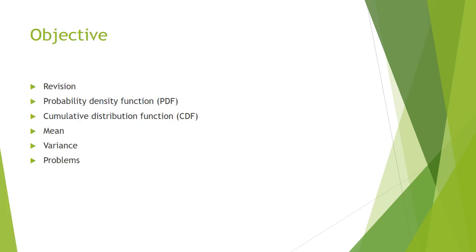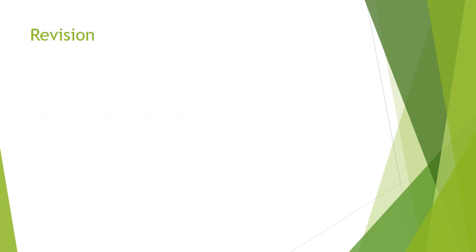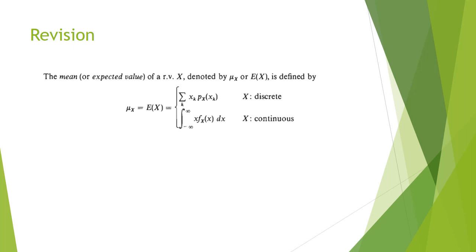Our objectives are: to revise what we have studied so far, to cover the probability density function for normal distribution, to discuss the cumulative distribution function, and to find the mean and variance of normal distribution. We will also solve some problems based on normal distribution.